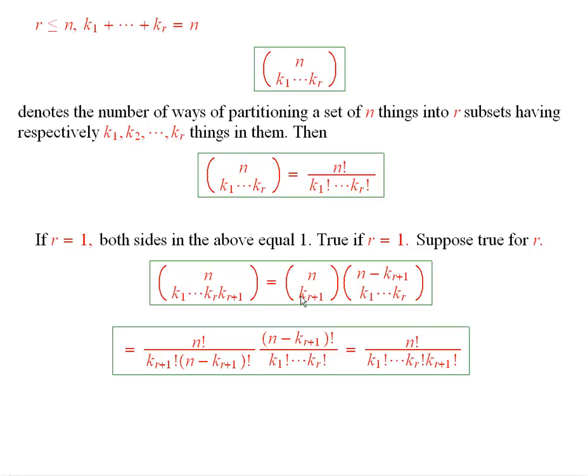We know what this is by the text. This is the number of ways of selecting a set of k sub r plus 1 things. And we know what this is by induction. This one equals this. This one equals this by induction.